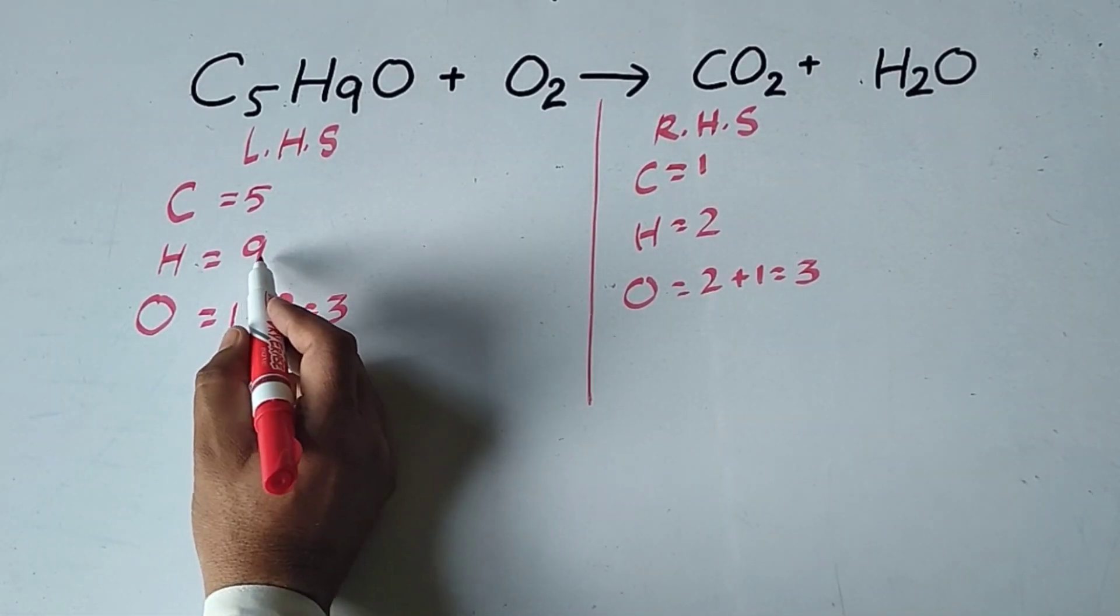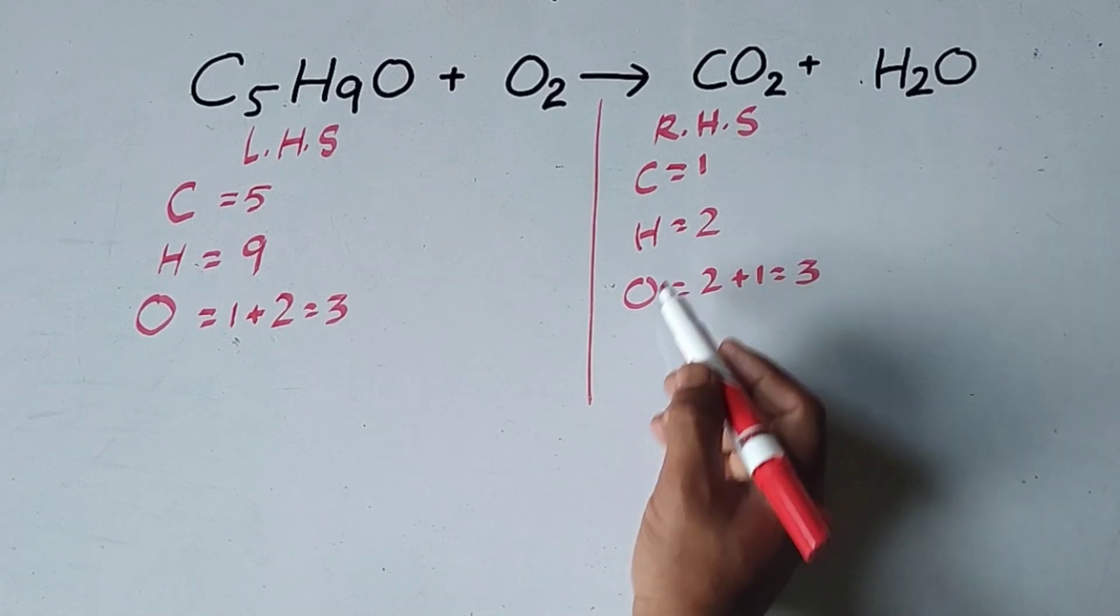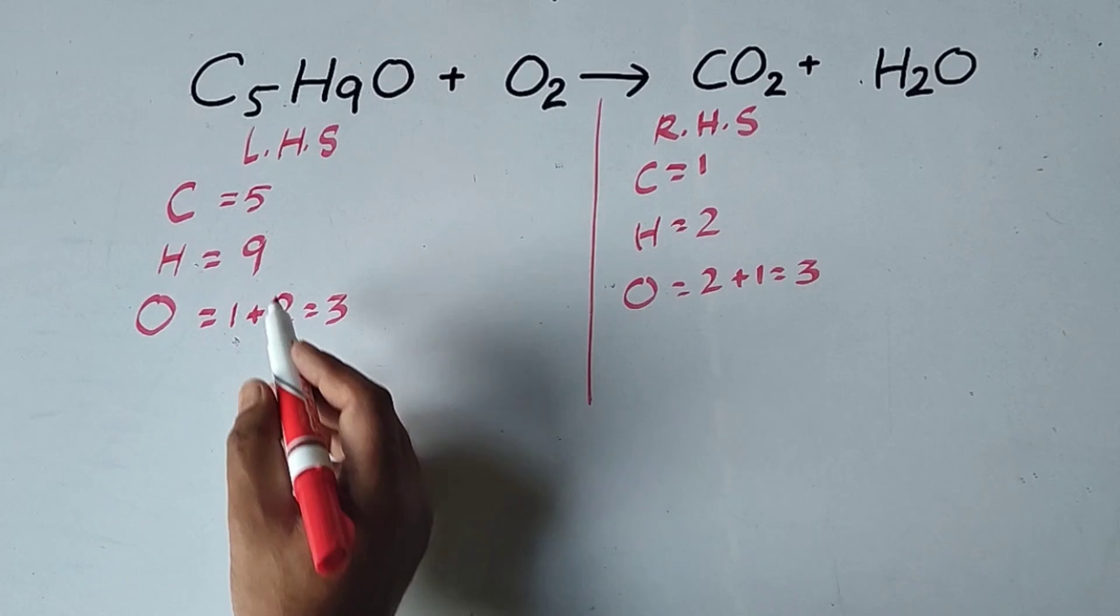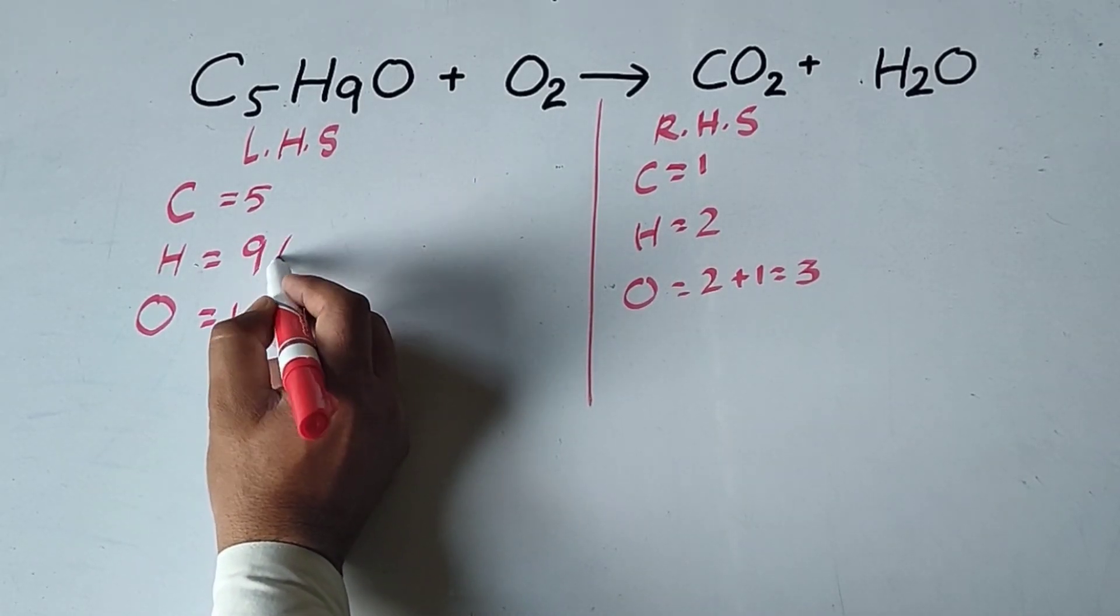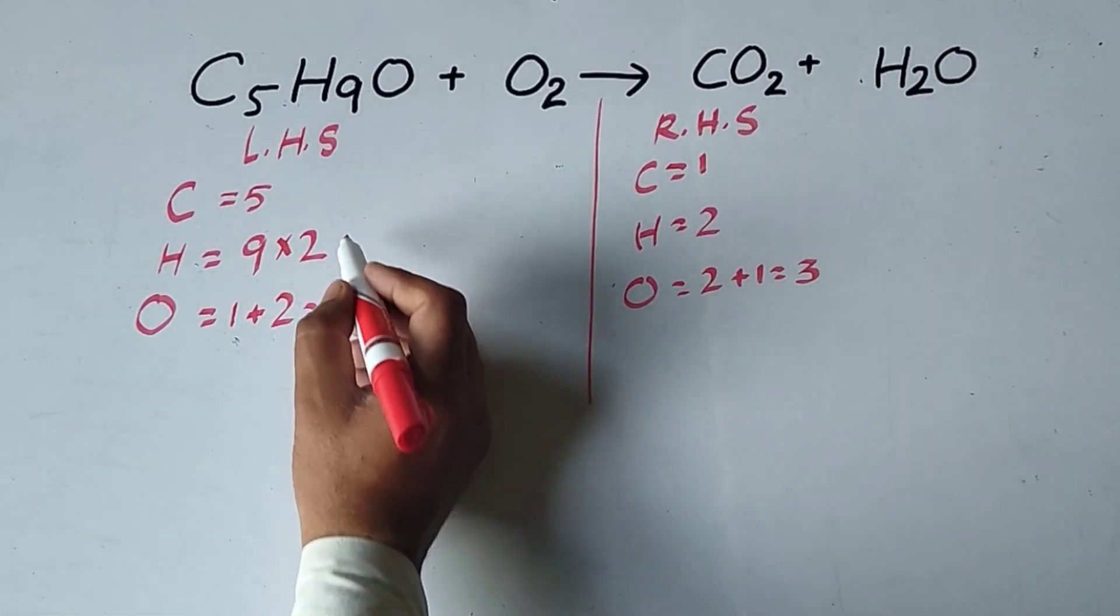Hydrogen atoms here are 9, here 2. So this number must be converted into an even number. If this 9 is multiplied by 2, we multiply it with 2, then it will be 18.